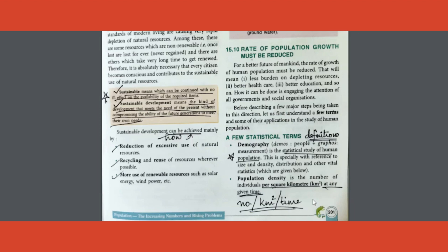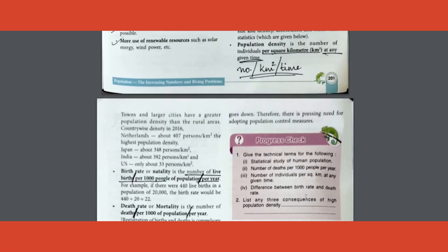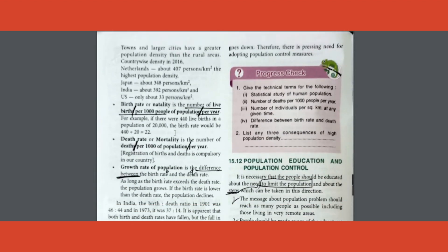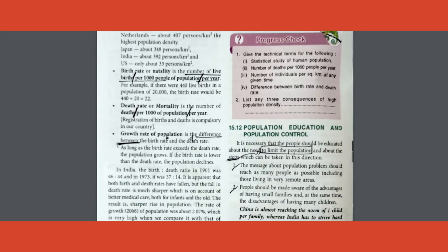Same way for birth rate and death rate, three parts are there. All the three you need to write. Then growth rate is the difference between birth rate and death rate. That you can mark.